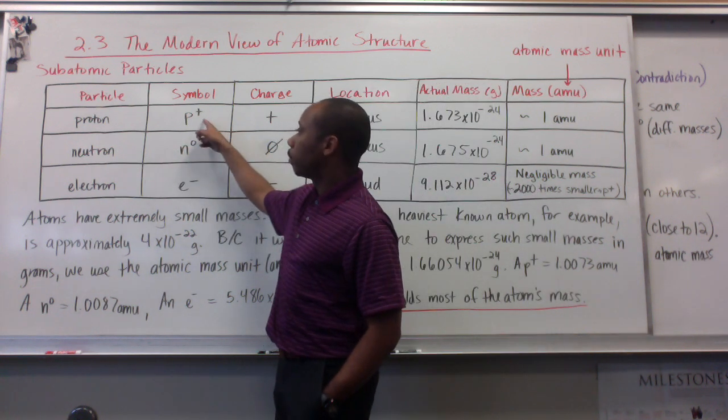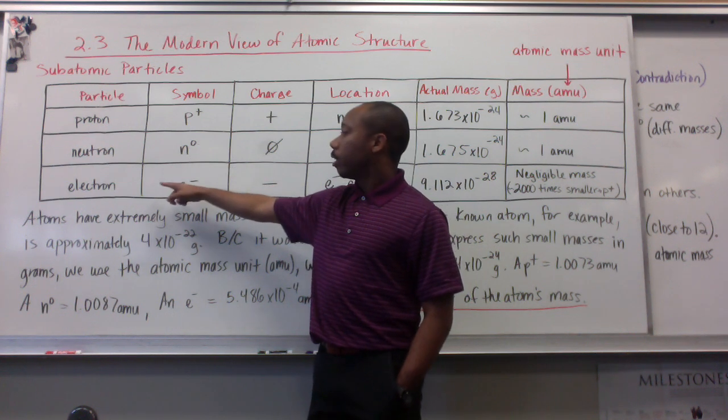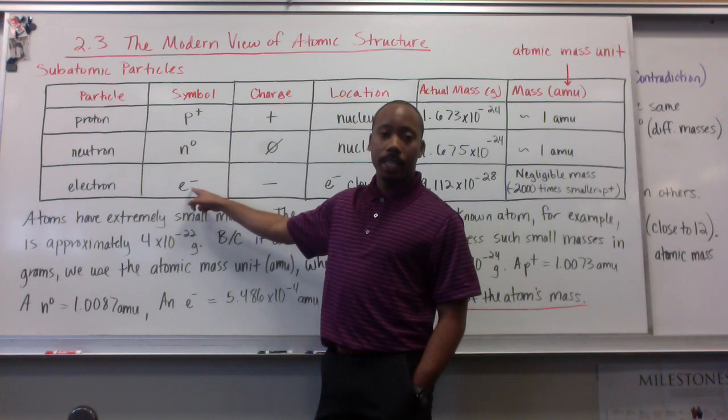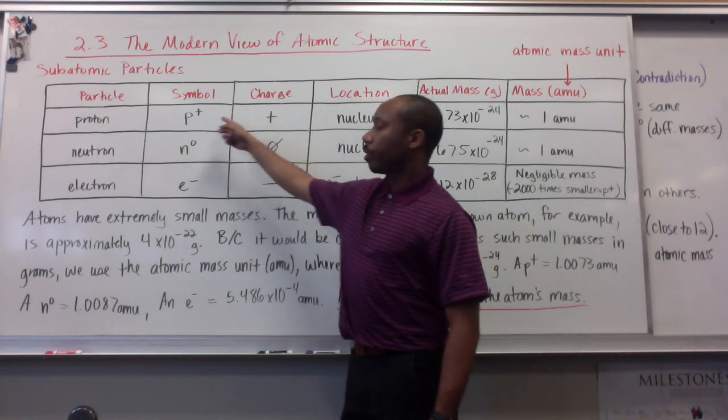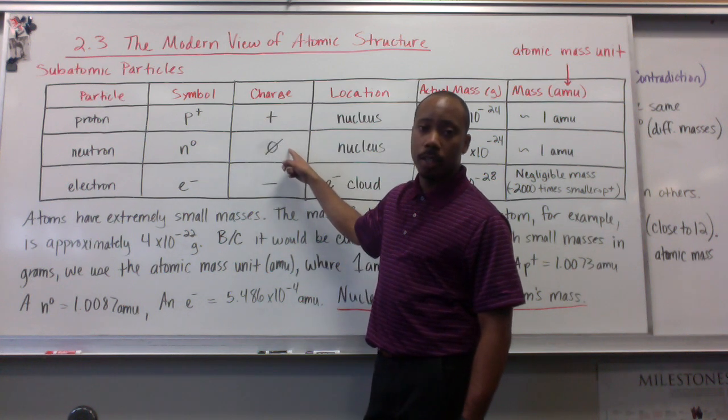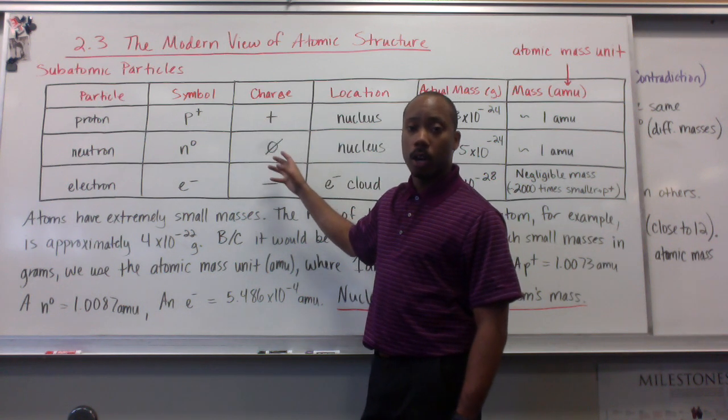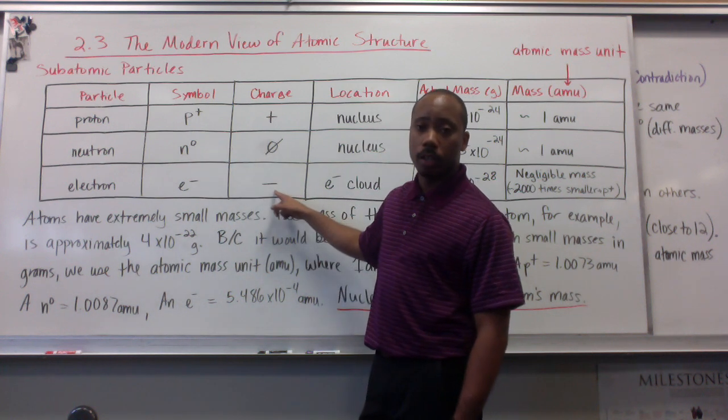The symbol for a proton is P+. The symbol for a neutron, N, with a zero here. Electron, symbol E-, the charges of a proton go along with their symbol. Charges of a proton is positive. The charge of a neutron is zero, no charge, hence the name neutron, like neutral. An electron has a negative charge.